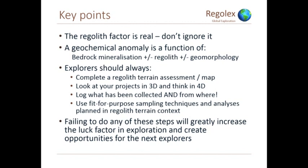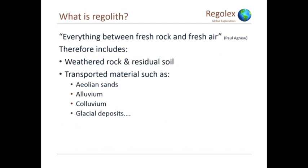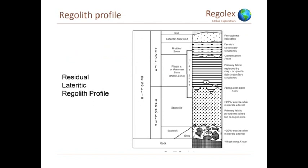Regolith — a very simple definition: everything between fresh rock and fresh air. That means it's all your weathered rock and residual materials, plus all the transported materials — aeolian sands, glacial deposits, lakes, et cetera. In a standard regolith profile there are two main components: the pedolith and the saprolith. In the pedolith, weathering has been so intense that the textures and fabrics have been destroyed — you won't recognize the rock type by looking at the fabrics, and there will be changes in the chemistry. That's where the chemistry is going to be most mobile and you'll get the biggest variations. Once you get down into the saprolith, it's isovolumetric weathering — you can recognize the textures and fabrics and should be able to get some structural measurements.